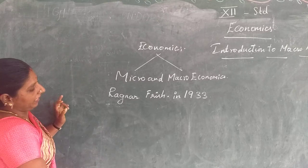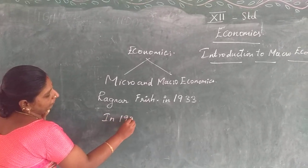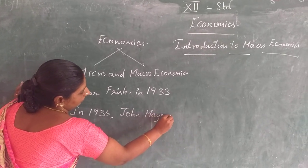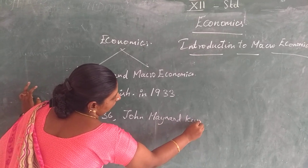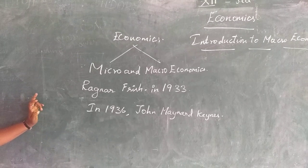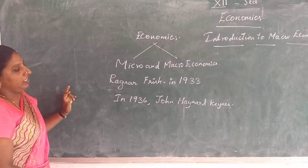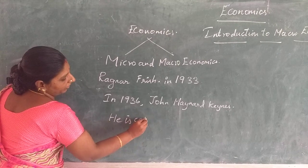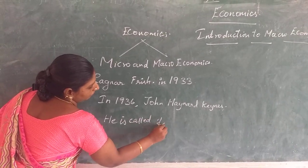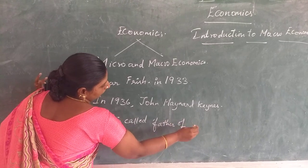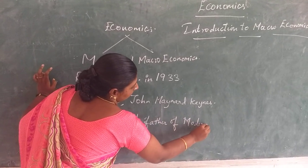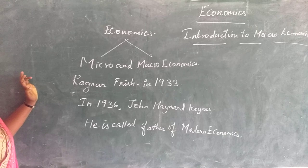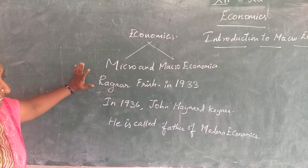After that, it took a new form in 1936. This is John Maynard Keynes, who explained in his book the General Theory of Employment, Income and Money. He explained macroeconomics in a detailed manner and is called the father of modern economics. This is a brief introduction to what we covered in the previous class.